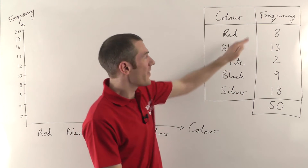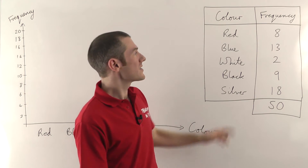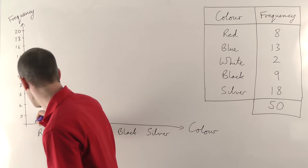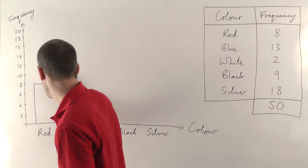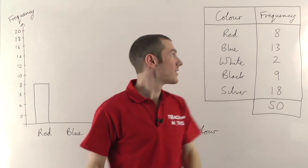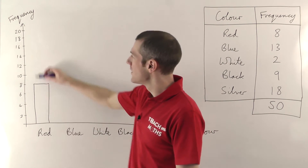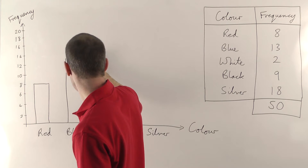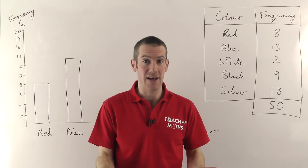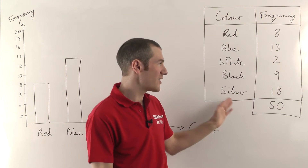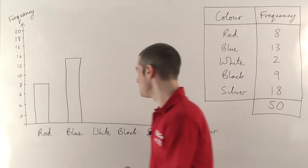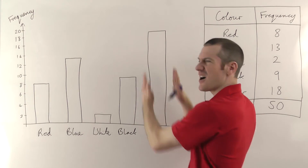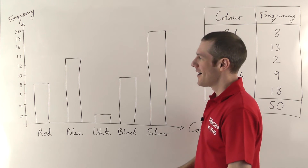The next thing is to draw the bars. The heights of the bars correspond to the frequencies. So the red bar needs to go up to 8 — you draw a bar above red that goes up to 8. Blue has a height of 13, so that goes halfway between 12 and 14. White has a height of 2, black has a height of 9, and silver has a height of 18. Give me a moment and I'll draw those. Okay, there we go — that's my bar chart. You have to imagine these bars are nice and straight, drawn with a ruler properly.